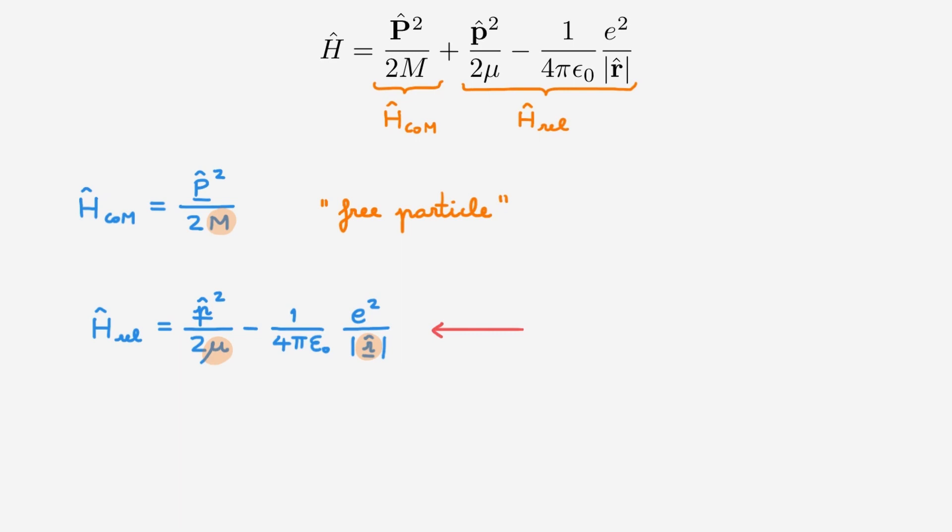So overall, what have we accomplished? Hydrogen is a two-particle system. However, by a smart choice of coordinates, we have shown how we can reduce the problem to the study of the relative motion of the two particles. And this relative motion is described by a Hamiltonian that looks like the Hamiltonian of a single particle — and mathematically, this is a much easier problem to solve. Let me remind you again that this discussion of the centre of mass and relative coordinates builds on the video on two interacting quantum particles that is linked in the description, so check it out if you need a refresher.